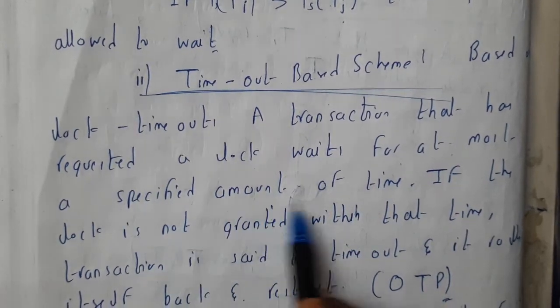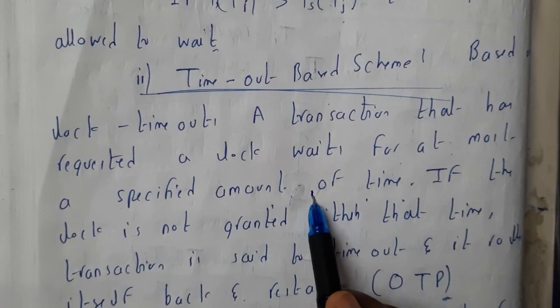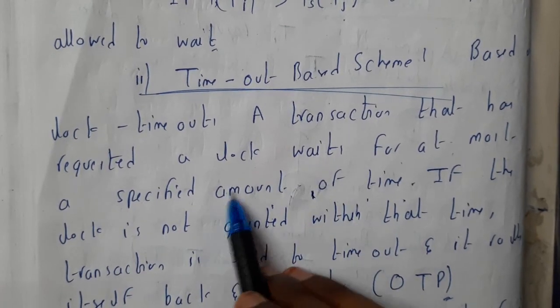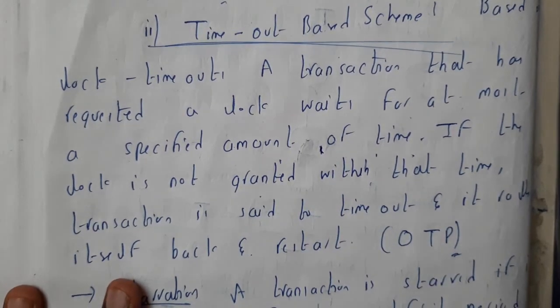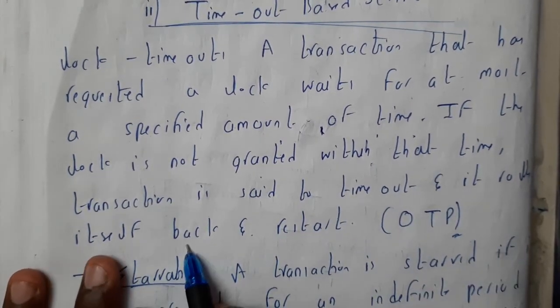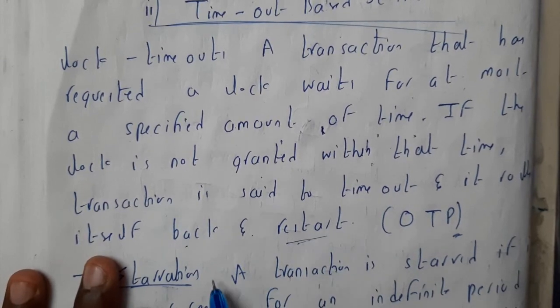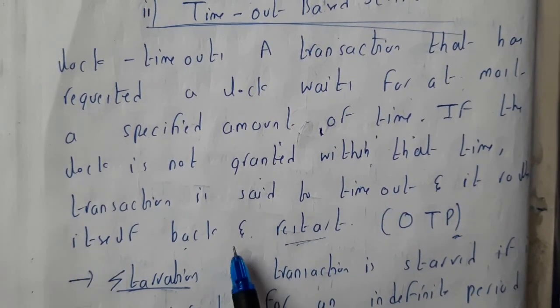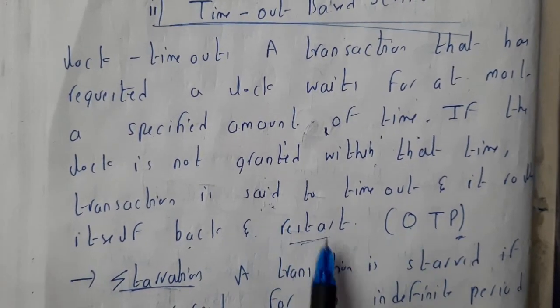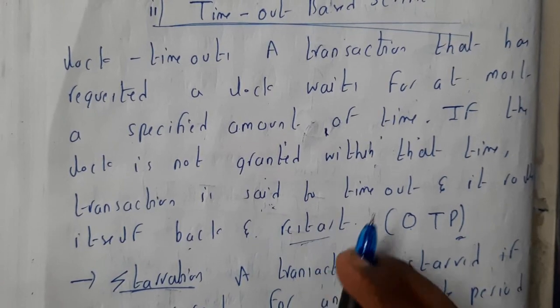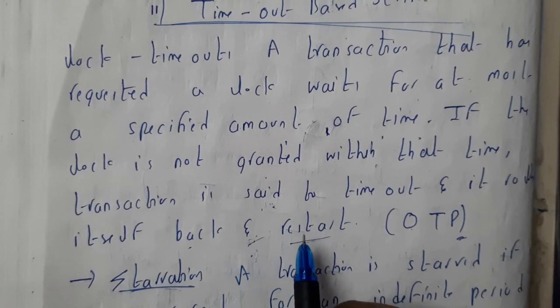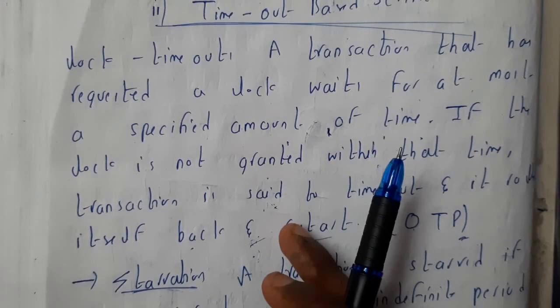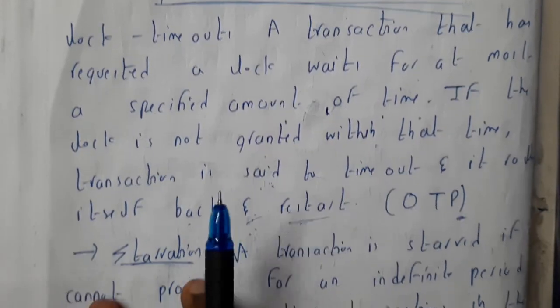A transaction that has requested a lock waits for at most a specific amount of time. If the lock is not granted within that time, the transaction times out and rolls back to the initial state and restarts. The best example for this is OTP. When you do any bank transaction, they will say in 30 seconds you need to enter the OTP or reset it.